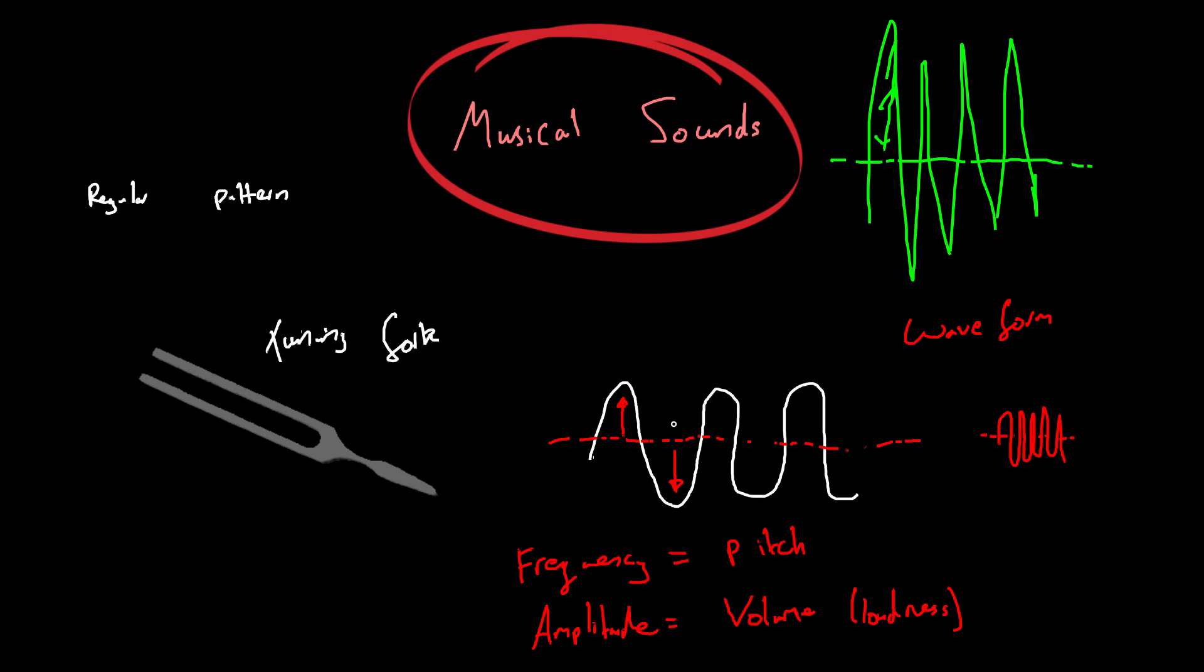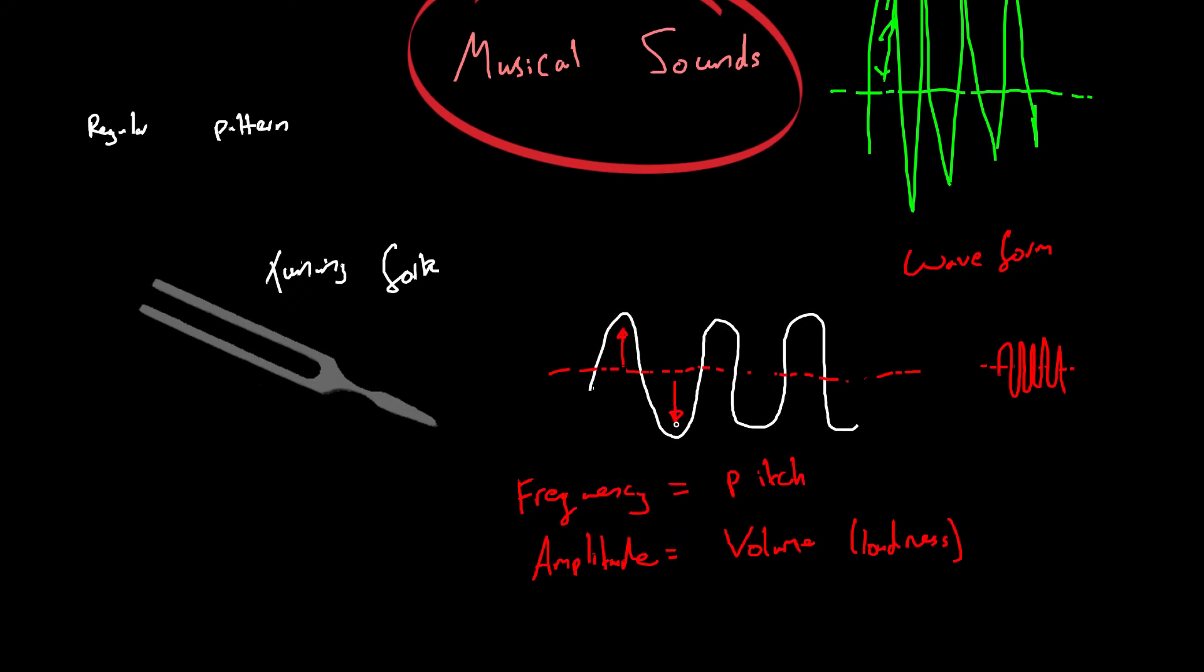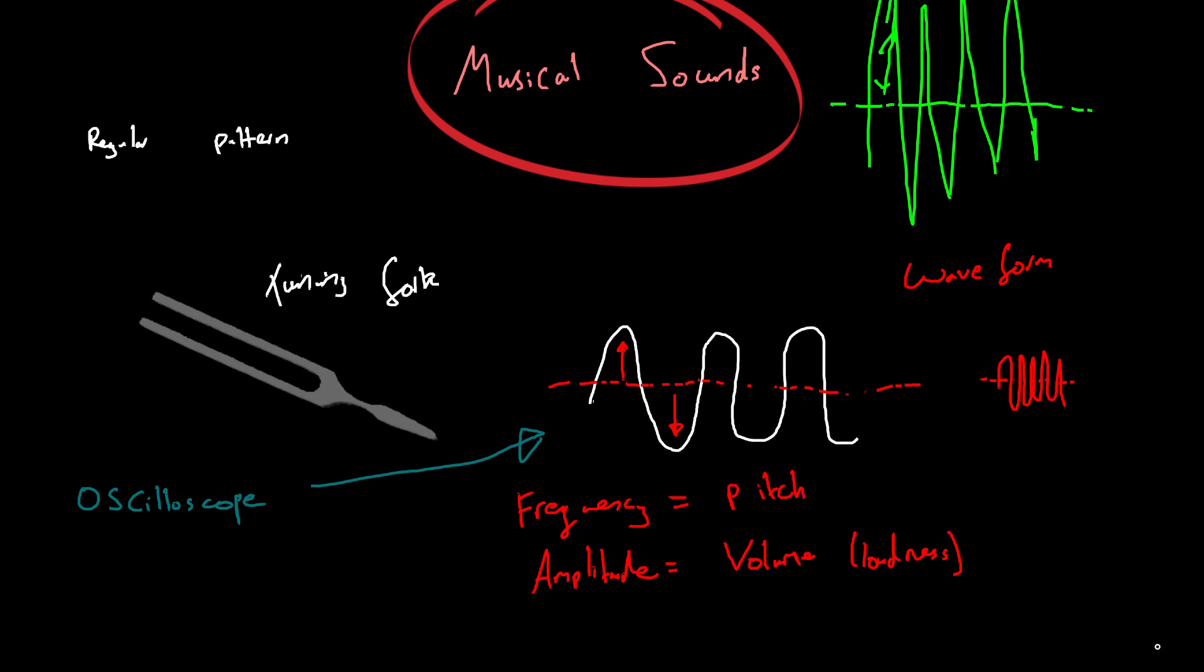And so, any sound, we can show the wave form by putting it through an oscilloscope. So, the device which produces a wave form is an oscilloscope. And that will produce something that looks like that.